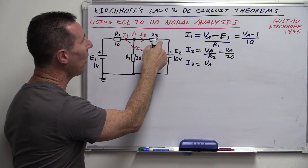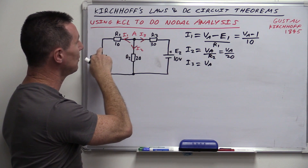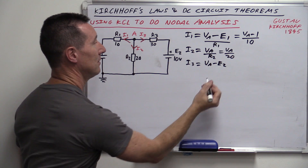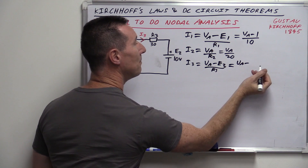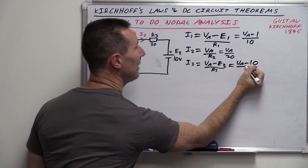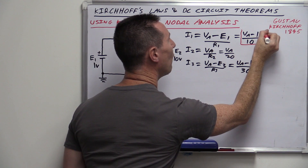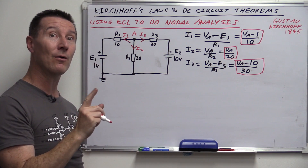We can now easily solve for VA: VA = 0.4333 / 0.1833 = 2.3636 repeating volts. We've just done nodal analysis to solve for node A using Kirchhoff's current law. As originally asked, what is the current through R2? Using Ohm's law: I2 = VA / R2 = 2.3636 / 20 = 0.11818 repeating amps. That's our answer.